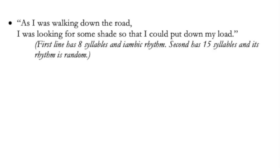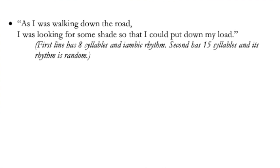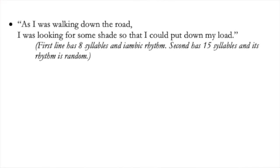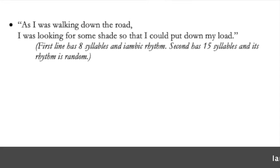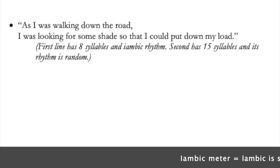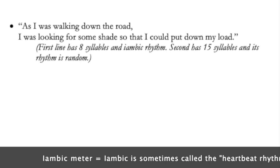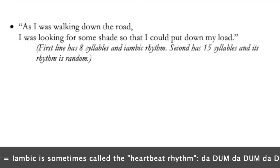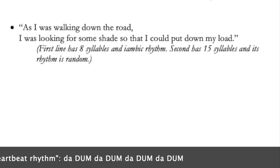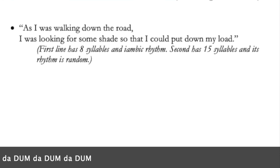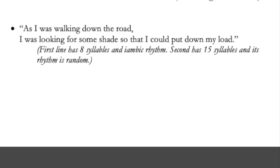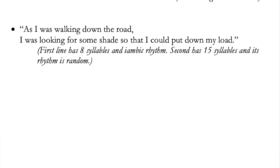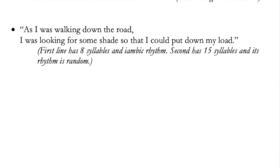Here's another forced rhyme example: 'As I was walking down the road, I was looking for some shade so that I could put down my load.' One line has eight syllables and a very distinct iambic rhythm — de-dum, de-dum, the heartbeat rhythm. 'As I was walking down the road.' Nice, eight beats. But the second line has 15 syllables and a random, non-iambic rhythm: 'I was looking for some shade so that I could put down my load.' Awful.